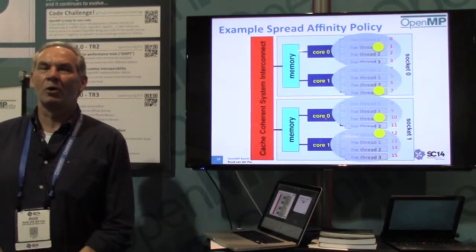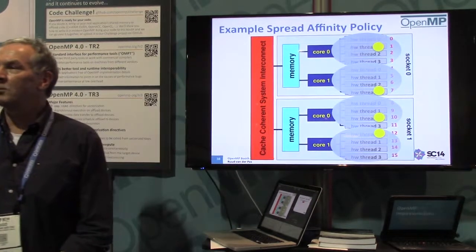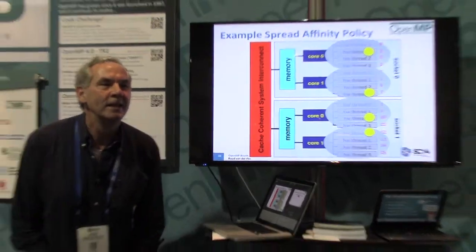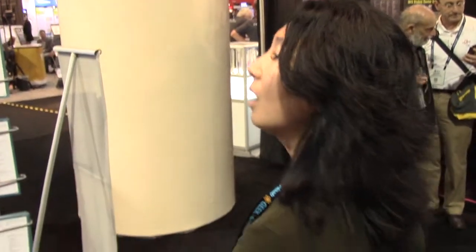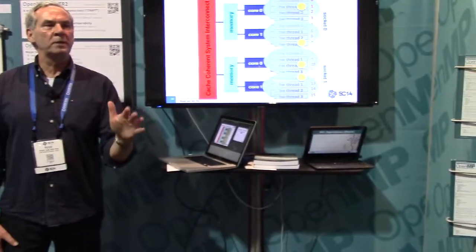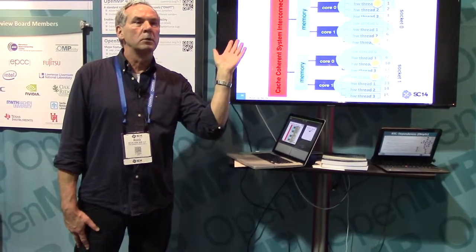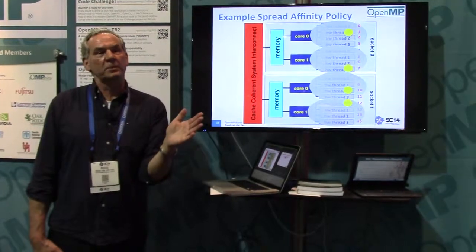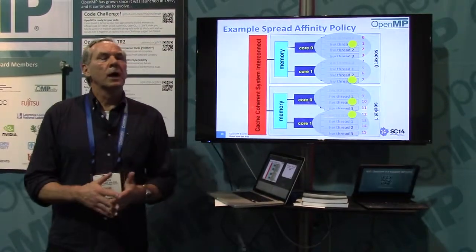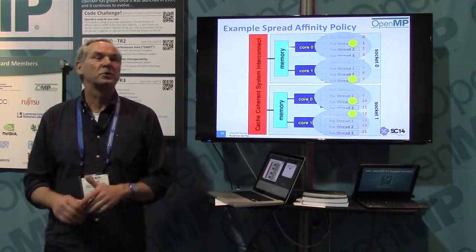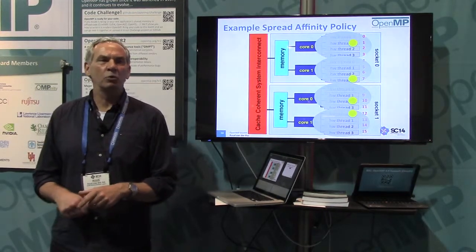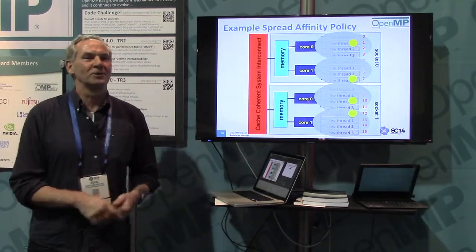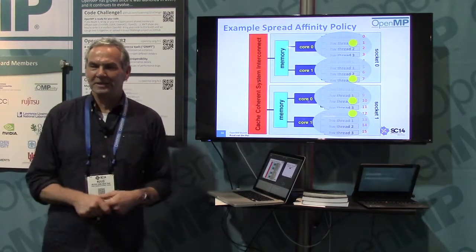Any more questions? The Xeon Phi program has an affinity setting called Scatter — that may be an extension implemented before OpenMP 4.0 was out. You could use either one, but I would use Spread because that gives portability across other platforms. I assume their Scatter is the same as Spread in 4.0 — my guess is it was invented before 4.0 came out and may even be an early name for Spread.